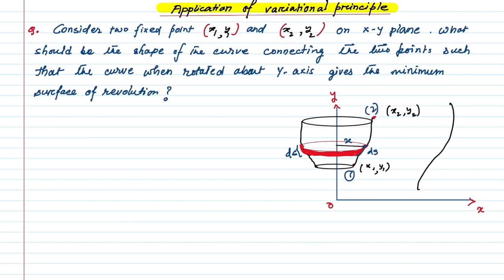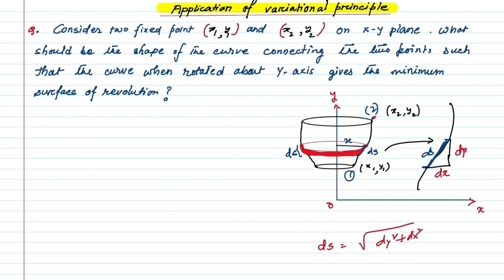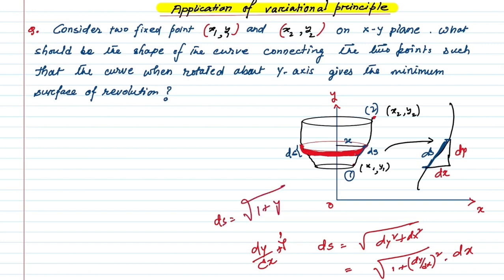Let me draw ds in magnified form. Suppose this element from here to here is ds. From the endpoints, draw two mutually perpendicular lines: one is dy and the other is dx. Then ds is given by Pythagoras theorem: ds = √(dy² + dx²). Taking dx² common we get √(1 + (dy/dx)²) · dx. Writing dy/dx as ẏ, ds = √(1 + ẏ²) dx.